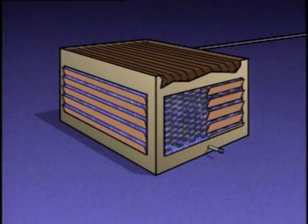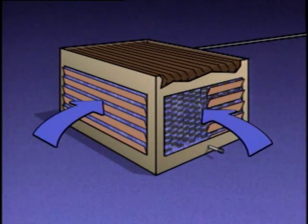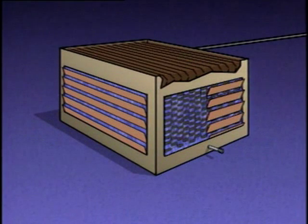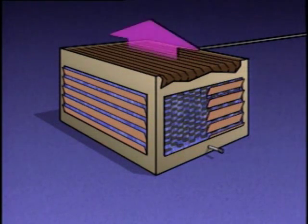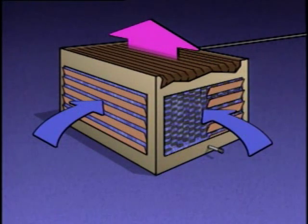Even though all cooling towers operate on the same basic principles, their designs can be divided into two broad categories: natural draft towers and mechanical draft towers. The term draft refers to the flow of air through the tower. In a natural draft cooling tower, air flows through the unit naturally without the aid of mechanical devices. As the water evaporates and heats the air, the air inside the tower becomes warmer and less dense than the air surrounding the tower. As the less dense warm air rises up through the tower, denser, cooler outside air is drawn into the bottom of the tower.